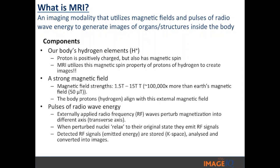An external radio frequency wave perturbs these hydrogen ions and causes them to magnetize and align along the axis. Once that perturbation is taken away, the nuclei start to relax and go back to their original state, also emitting RF signals. These signals are then detected, stored in what is called K-space, analyzed by a complex system in the background, and converted into an image.